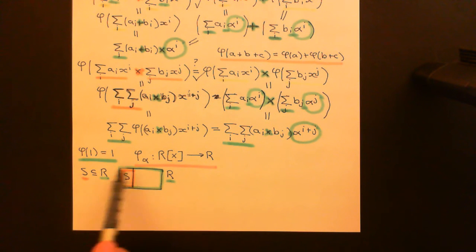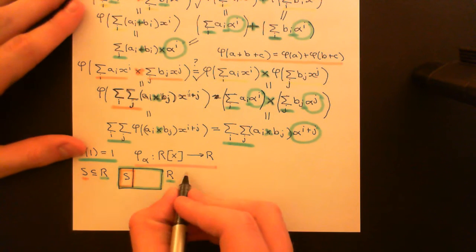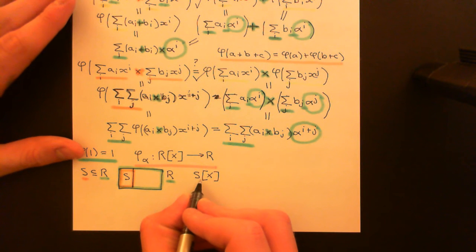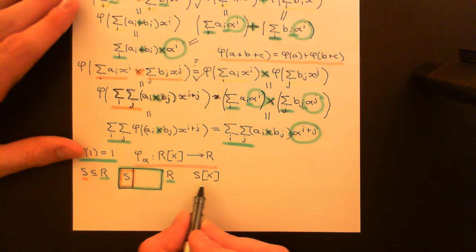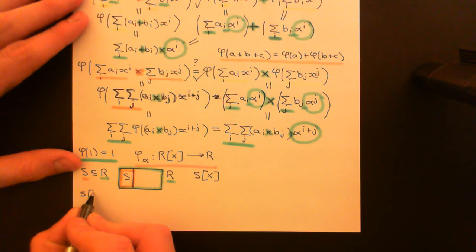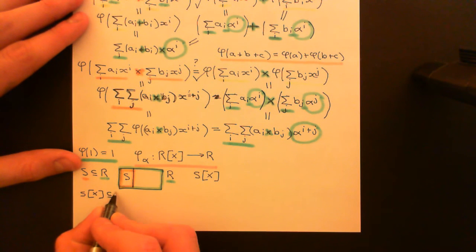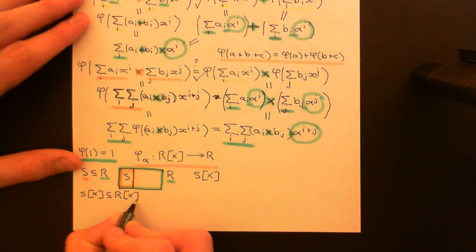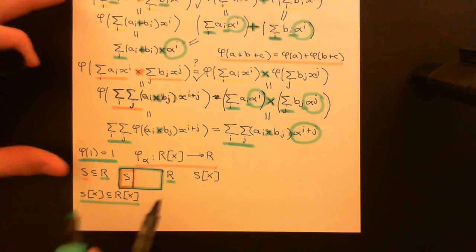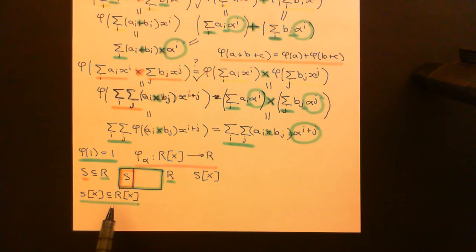A sub-ring is a subset that, with the restricted addition and multiplication law from the larger ring capital R, is a ring in its own right. Now here comes the interesting thing. Because it's a ring in its own right, you can quite happily consider the ring of polynomials over the sub-ring capital S. It's a ring in its own right, so you can certainly generate its ring of polynomials. The ring of polynomials over this sub-ring capital S is going to be a sub-ring of the ring of polynomials with coefficients in the ring capital R. I'm just using 'is a subset of,' but I mean 'is a sub-ring of.'